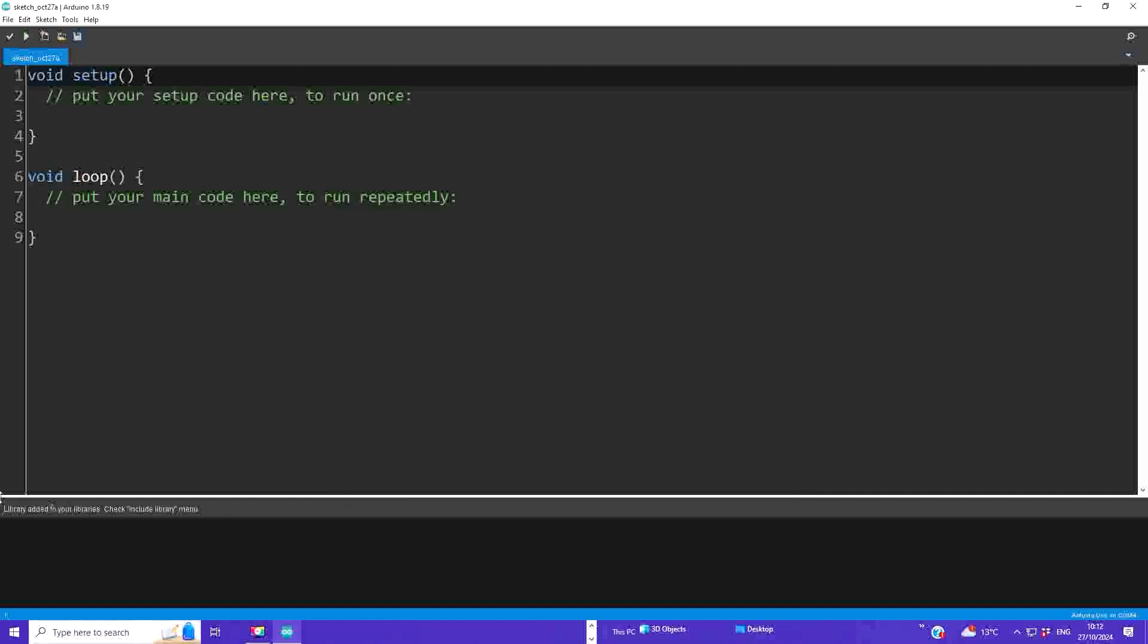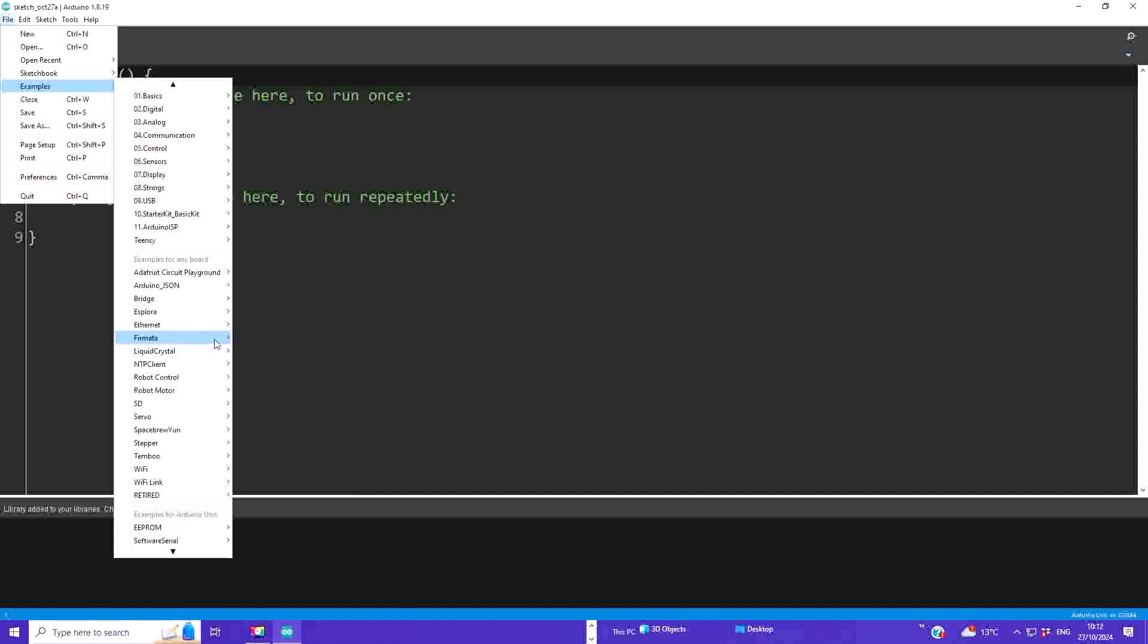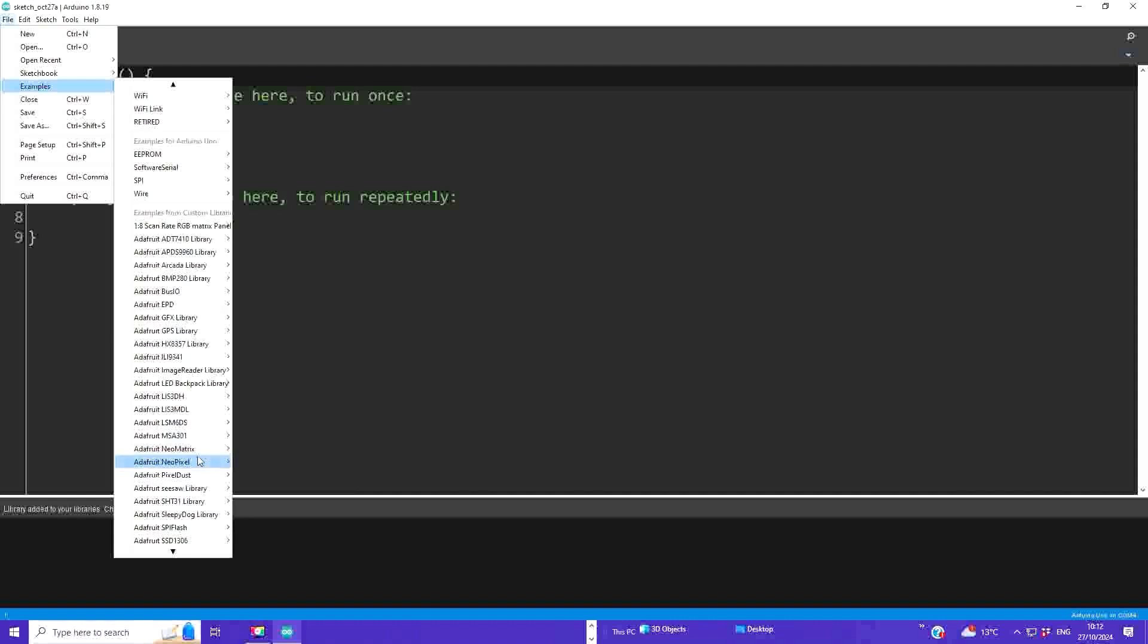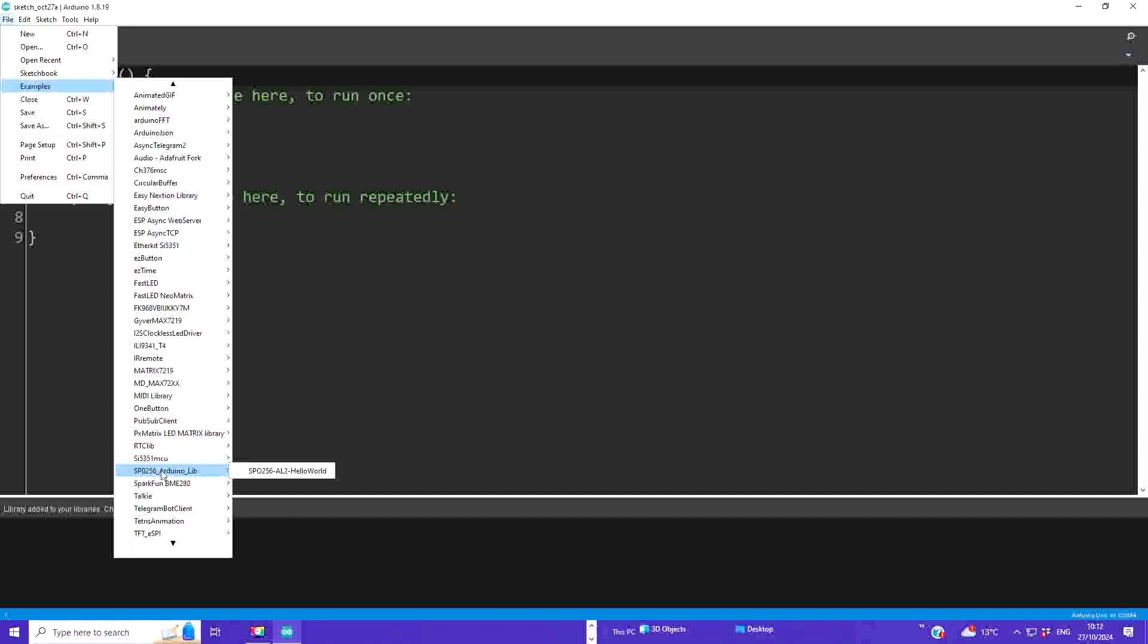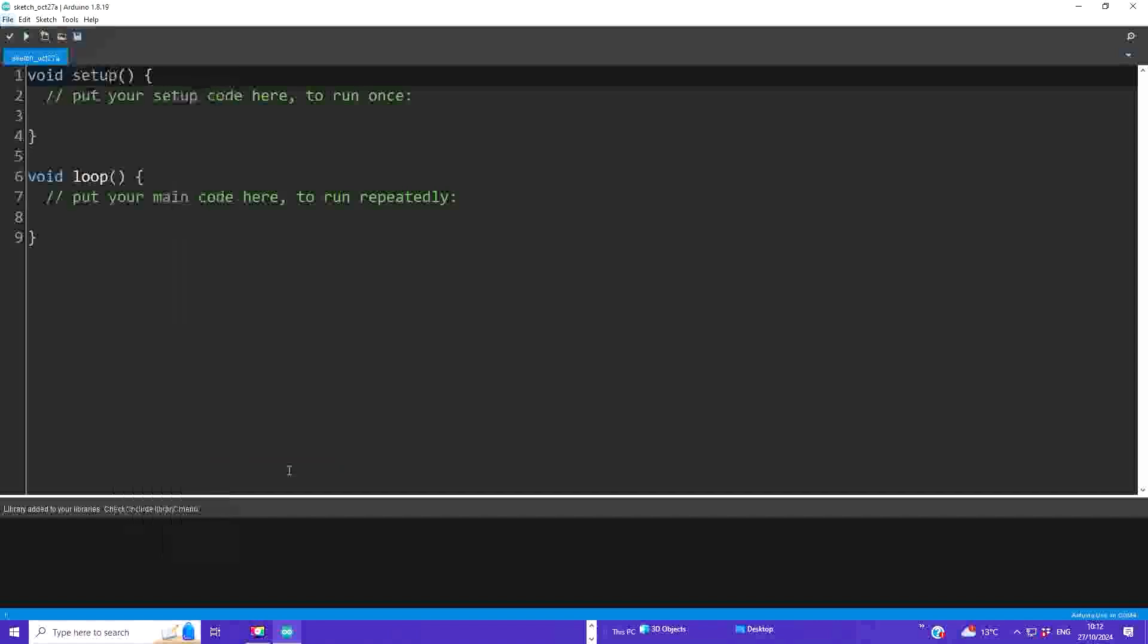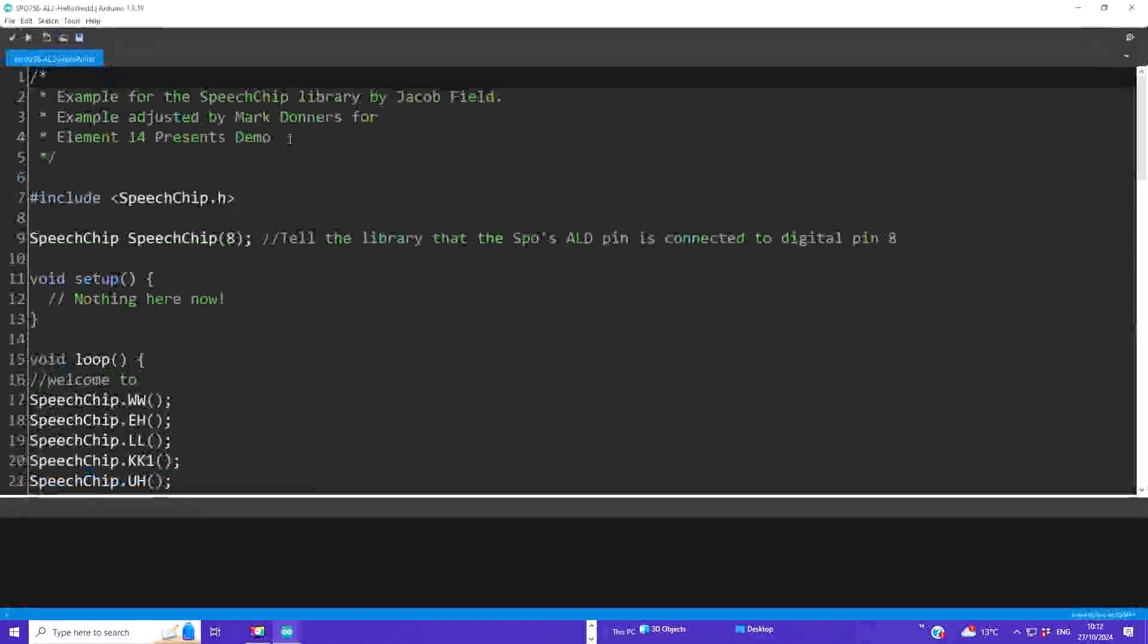Now you see the library has been added to your libraries, and all you need to do now is open the example. For that we go to examples, and we find the library that I just installed, which would be sp0256 Arduino lib, and there it is. Now let me talk you through the example.